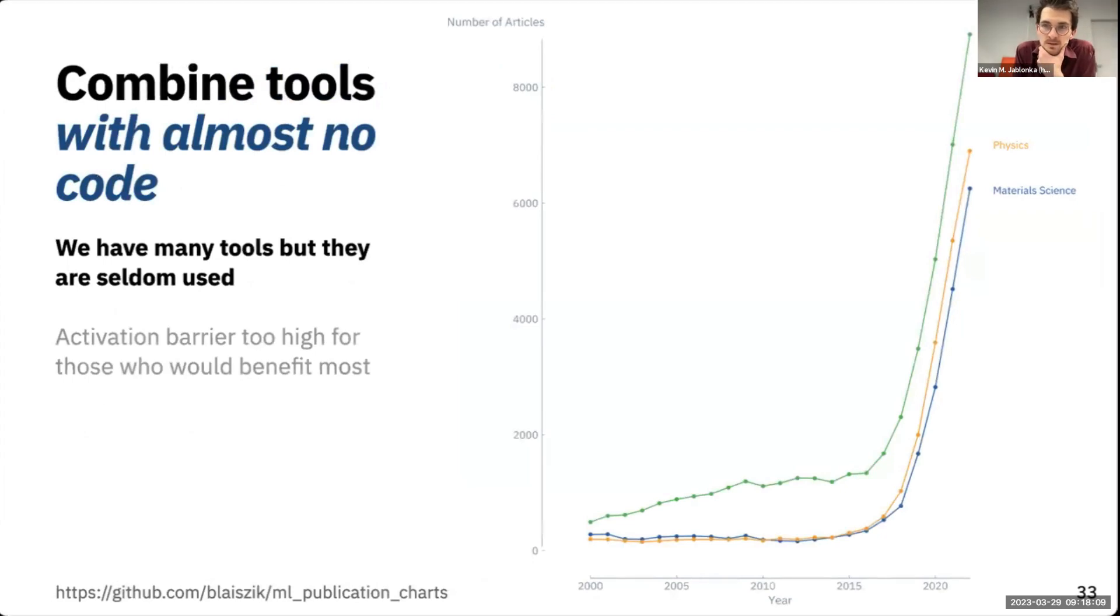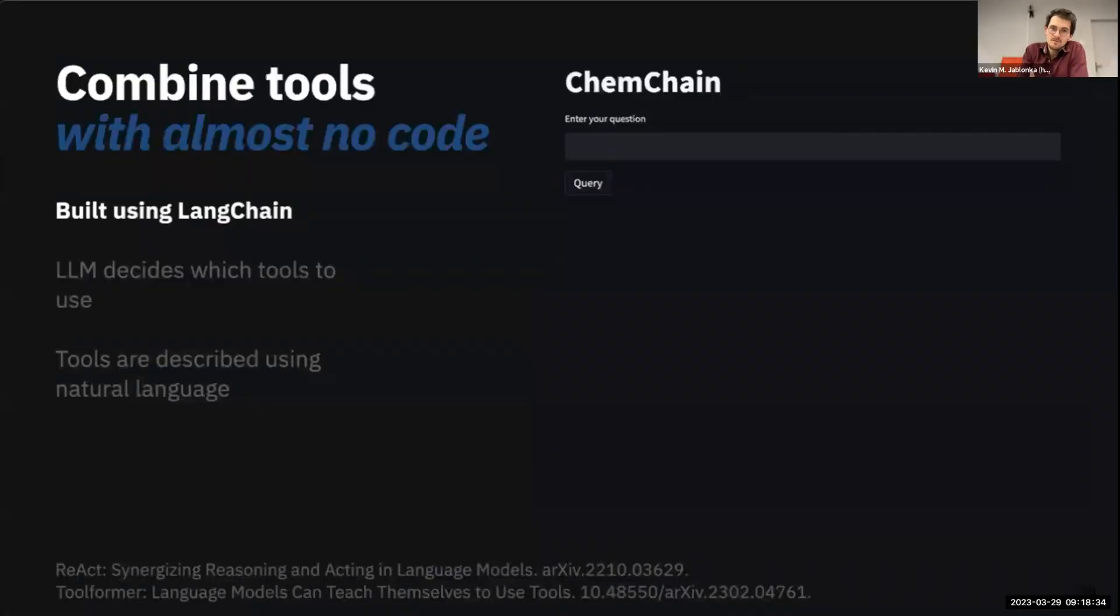One thing that has been fascinating for me is that we have this growth in using ML tools in chemistry, material science, and physics. We have all of those tools, but somehow bench chemists seem to not use them. I think one of the reasons is that they are just too hard to use in many cases. No one wants to pull down a GitHub repo and install dependencies and whatnot.